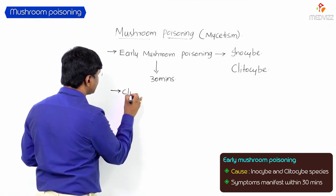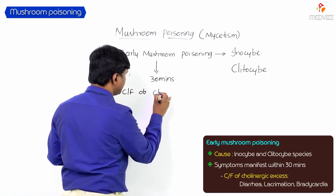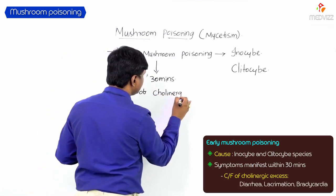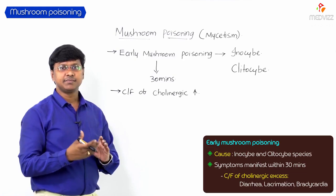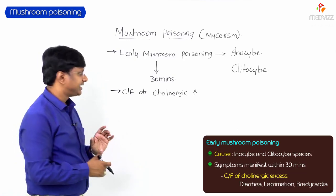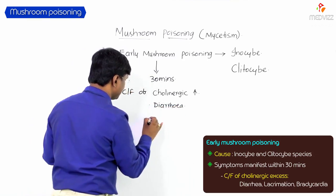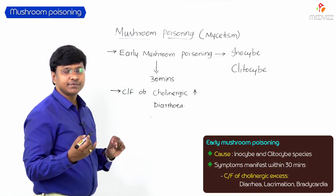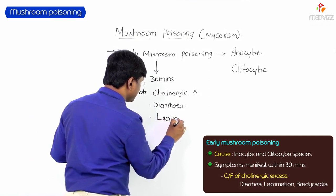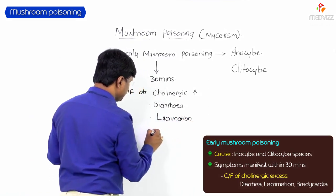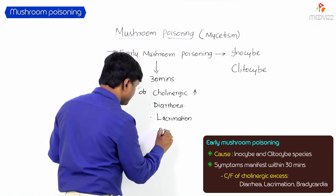The clinical features are those of cholinergic excess. These include diarrhea due to increased gastrointestinal motility, increased secretions leading to excess lacrimation, and bradycardia due to reduced heart rate.